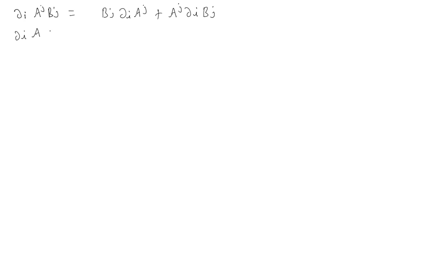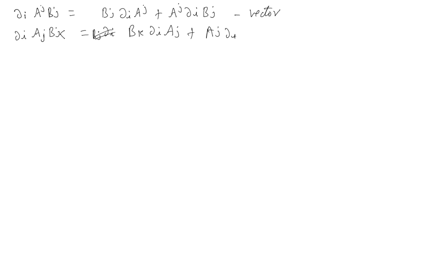You can also have a case like partial_i (A_j B_k). Notice that only one free index survives at the end, making this a vector, or if we keep indices I, J, K, this object with three indices is a tensor. In the next class I will clarify why there are upper and lower indices and provide more information.